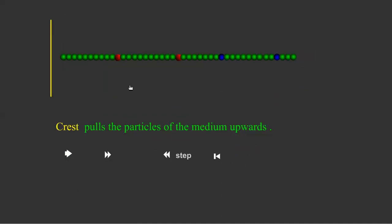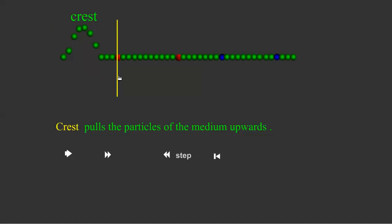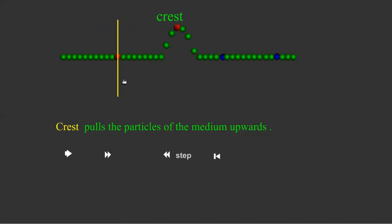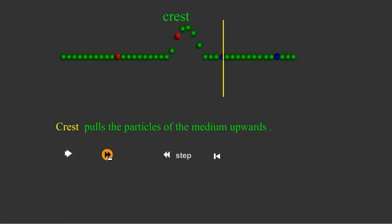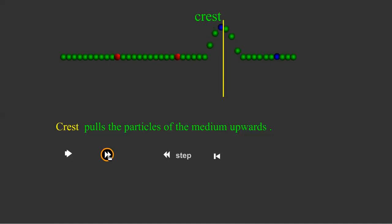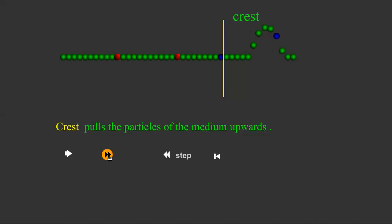To understand a very important phenomenon — the principle of superposition — let us consider a crest. As the crest reaches a particle, it pulls the particle up and then allows it to return to its mean position. The job of the crest is pulling the particle in one direction and then allowing it to go back to its mean position.